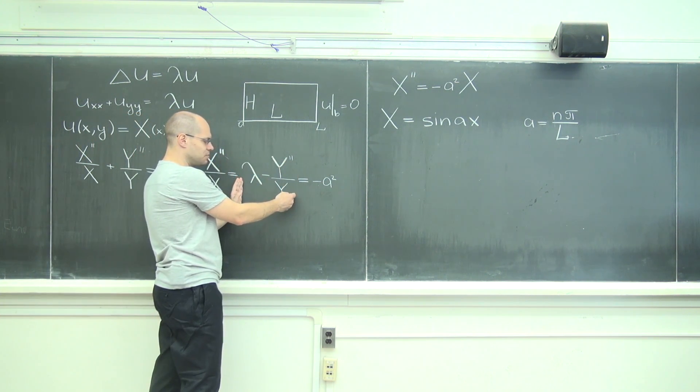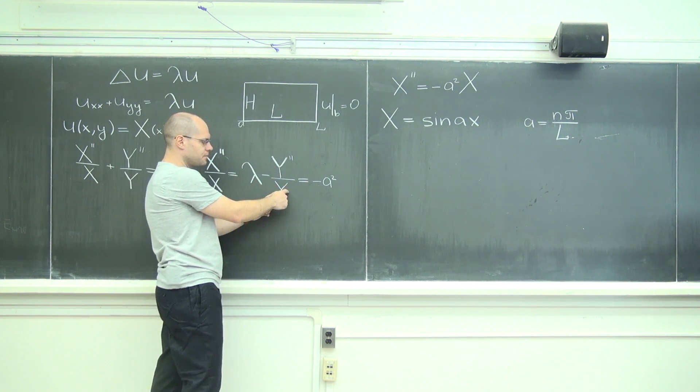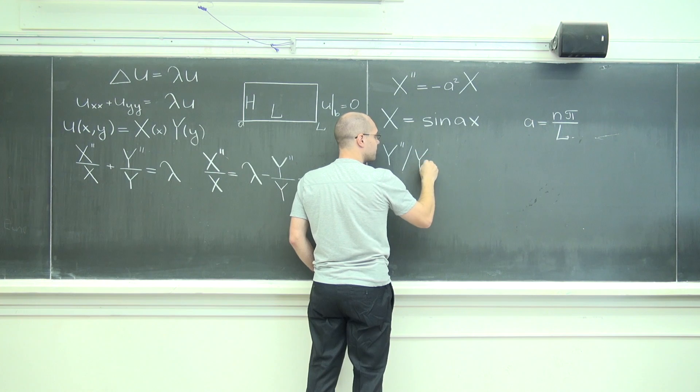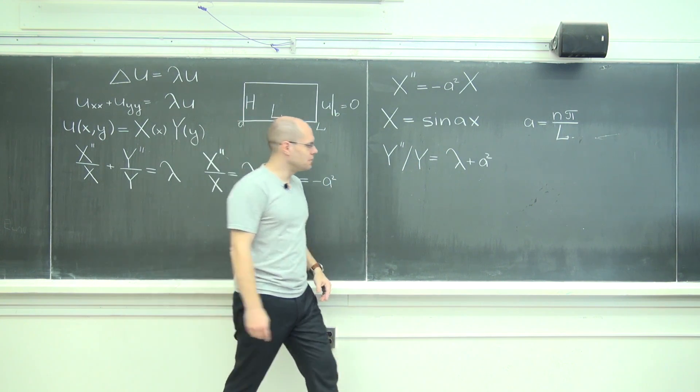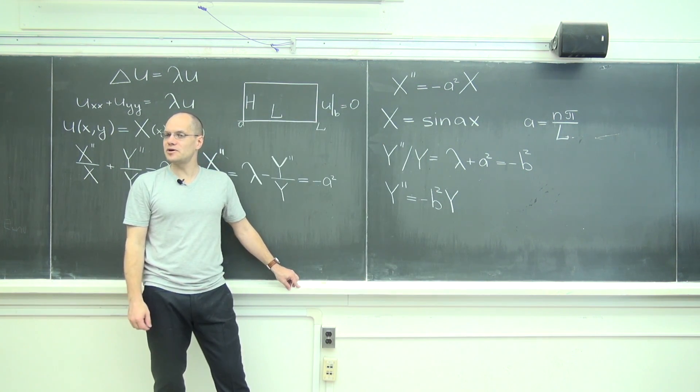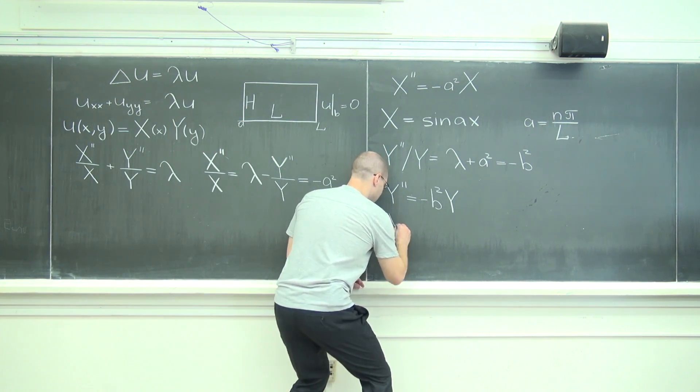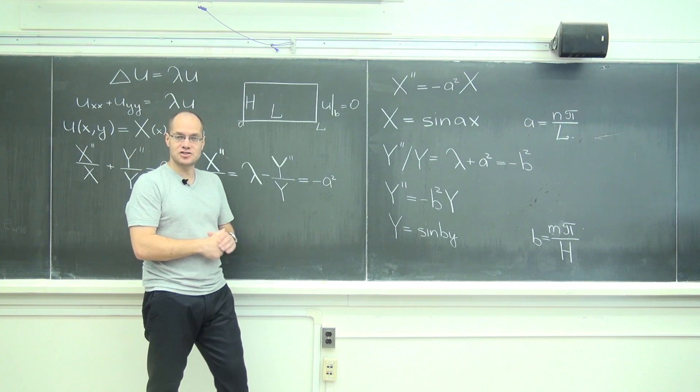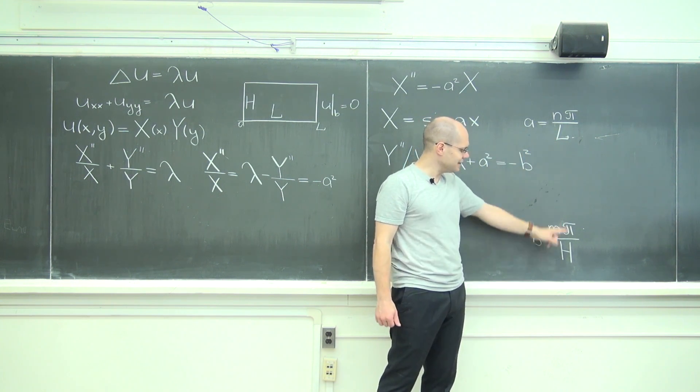Now let's deal with this part. We find that y double prime over y equals lambda plus a squared. This too needs to be a negative number, so I will call it minus b squared. Same equation with a different constant, so the solution is similar. The y direction has its own quantization - one is determined by L, the other is determined by H.